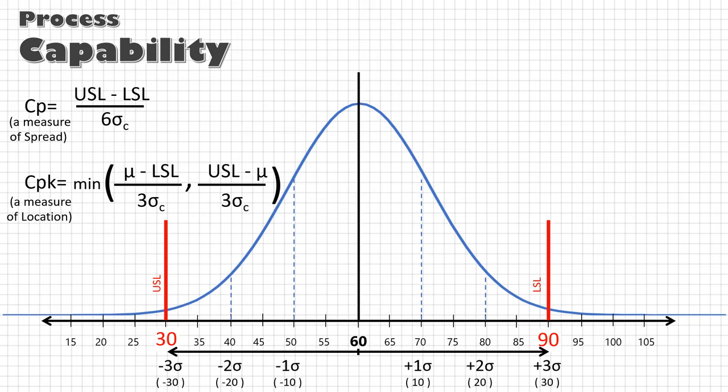Once we have identified that a process is capable of producing parts within the target specification, now we can proceed to actually monitor the process performance.